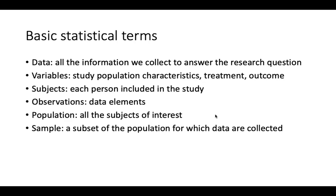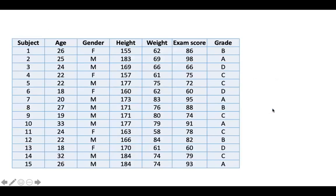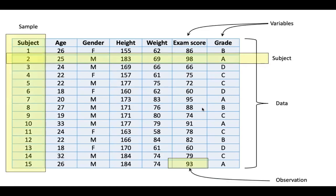Let's take a simple dummy data set — a group of 15 students and their performance on some test. All these numbers are the data. We obviously have 15 subjects here, and for each subject we have data for seven variables: age, gender, etc. For each subject, for each variable, we have a single data element, which is our observation, and all our observations make up the data set.